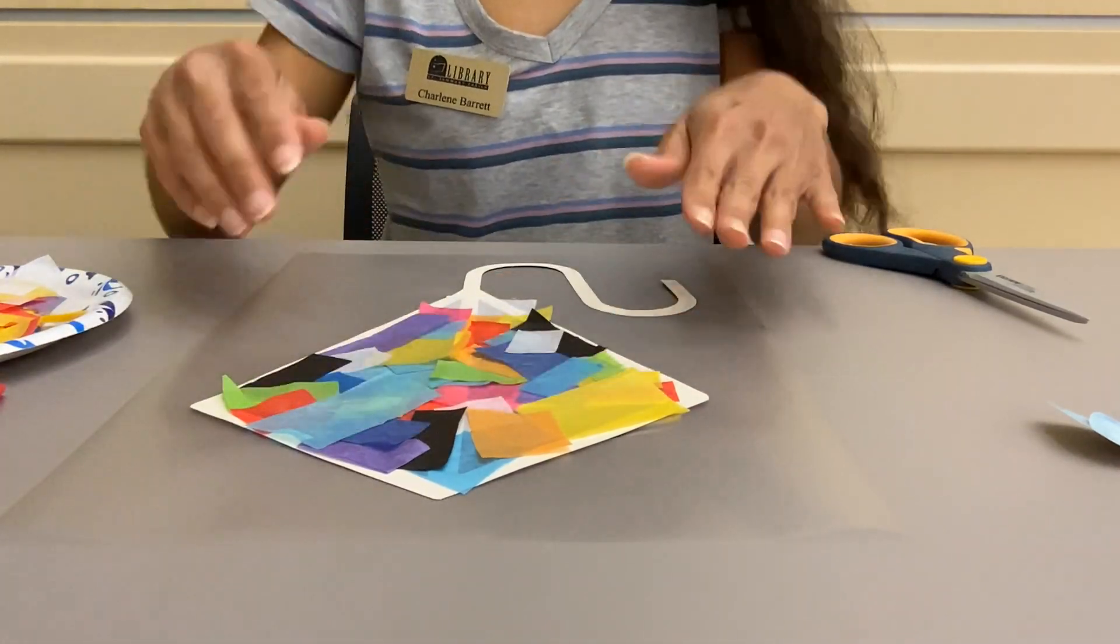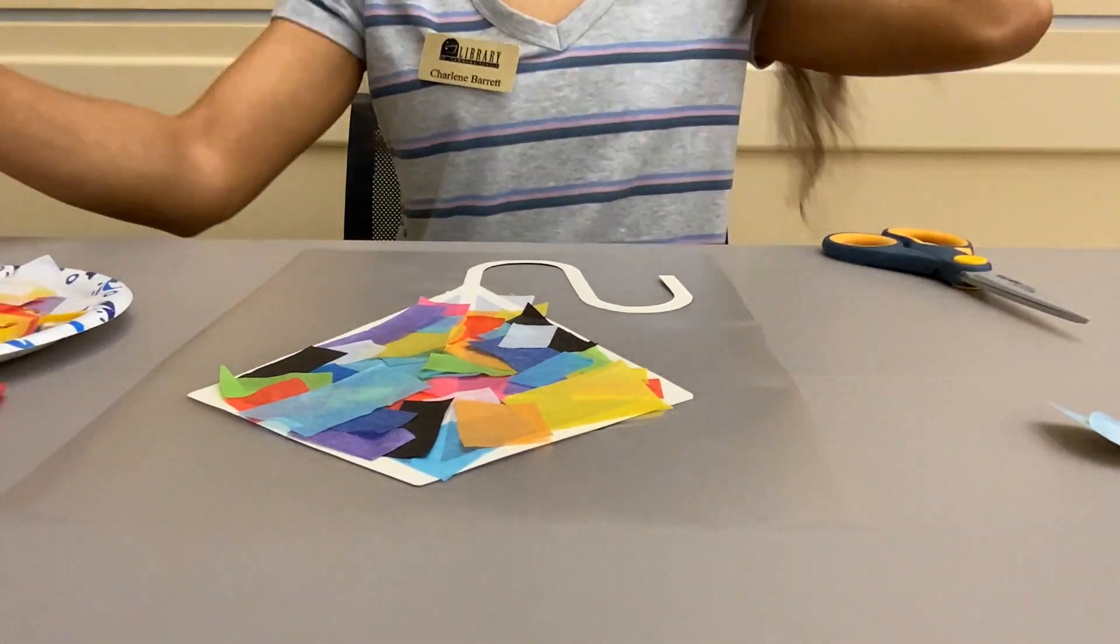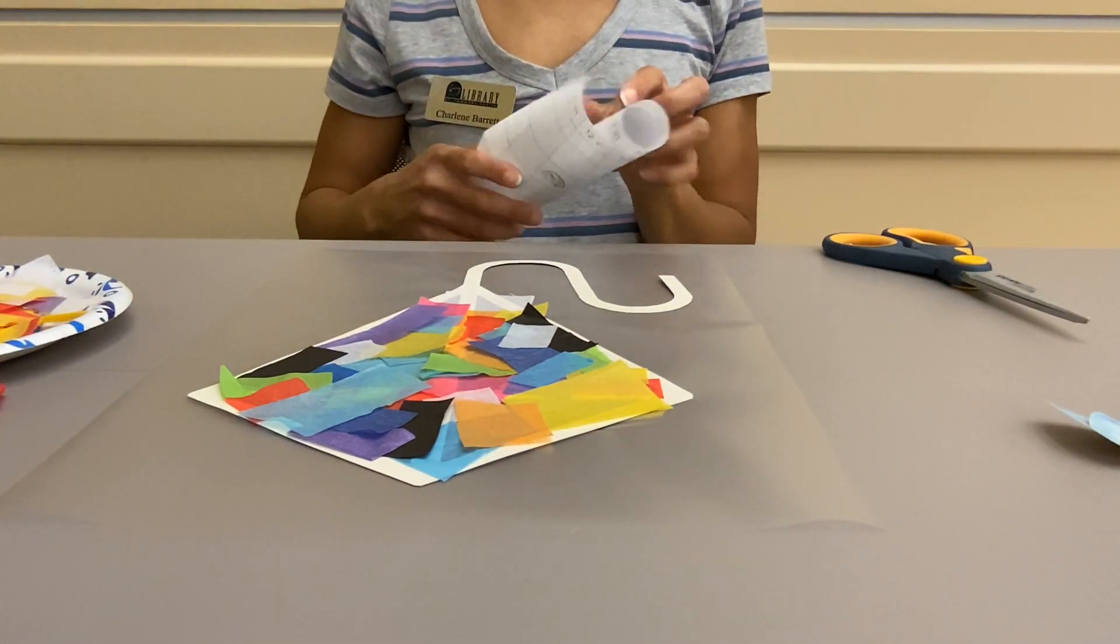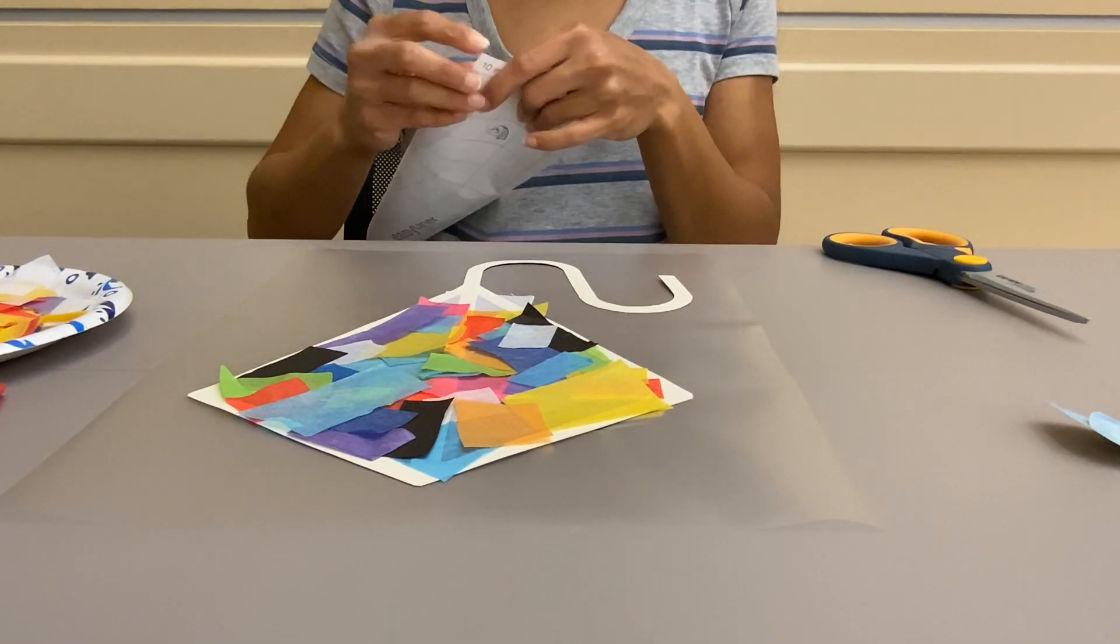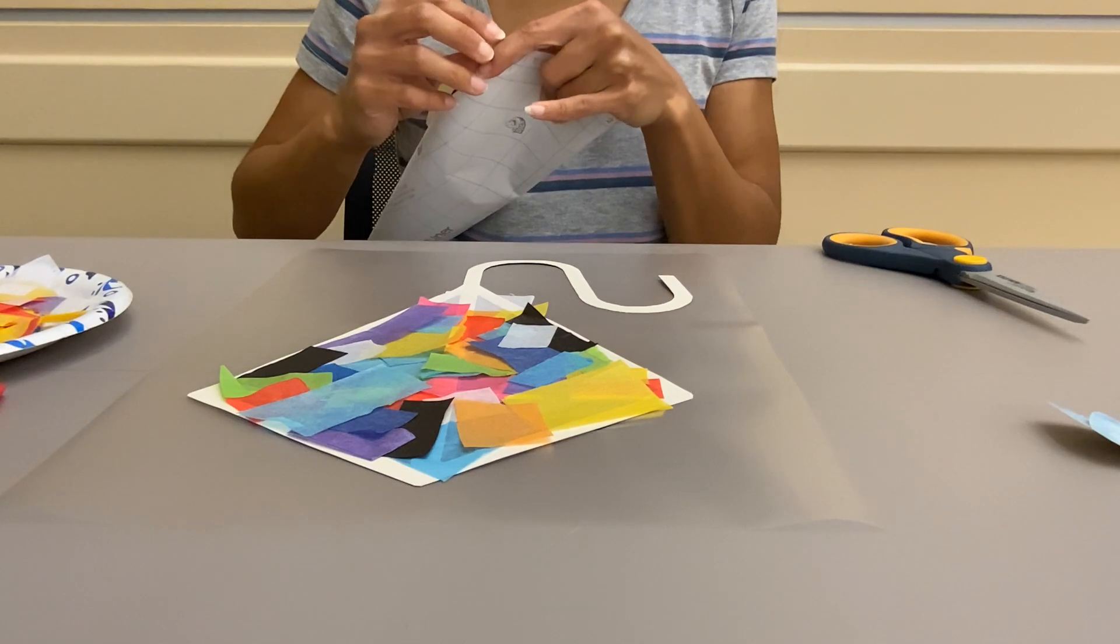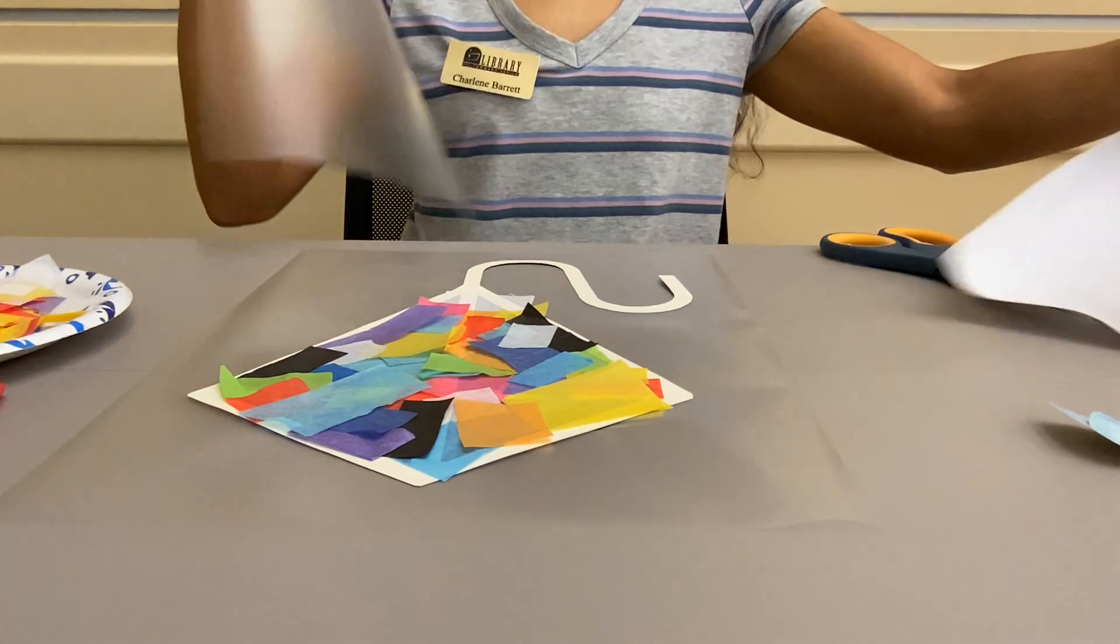Once it is completely filled, it should look like this from the other side, and you're just going to take your other contact paper and put it right on top of it, this time sticky side down.